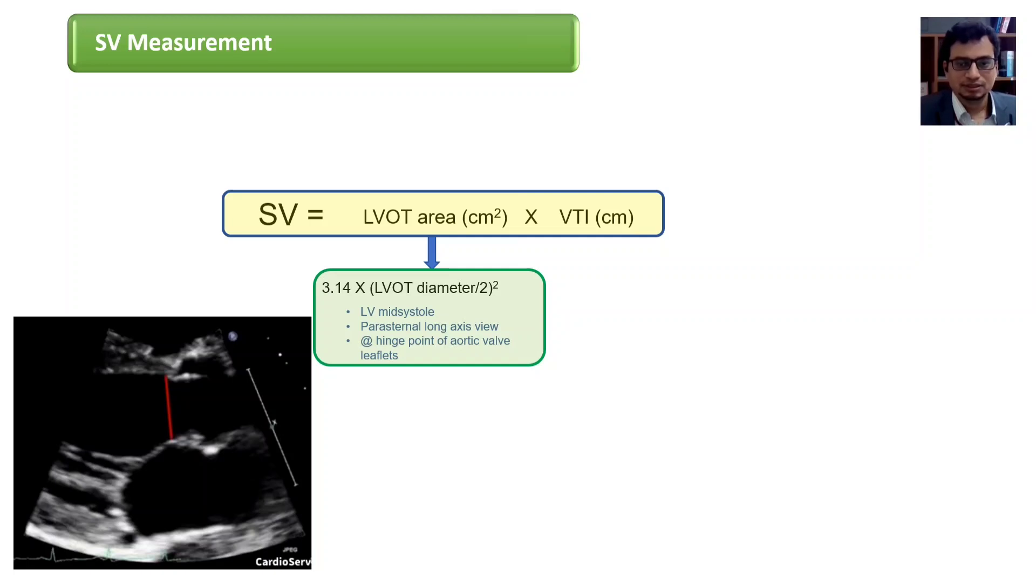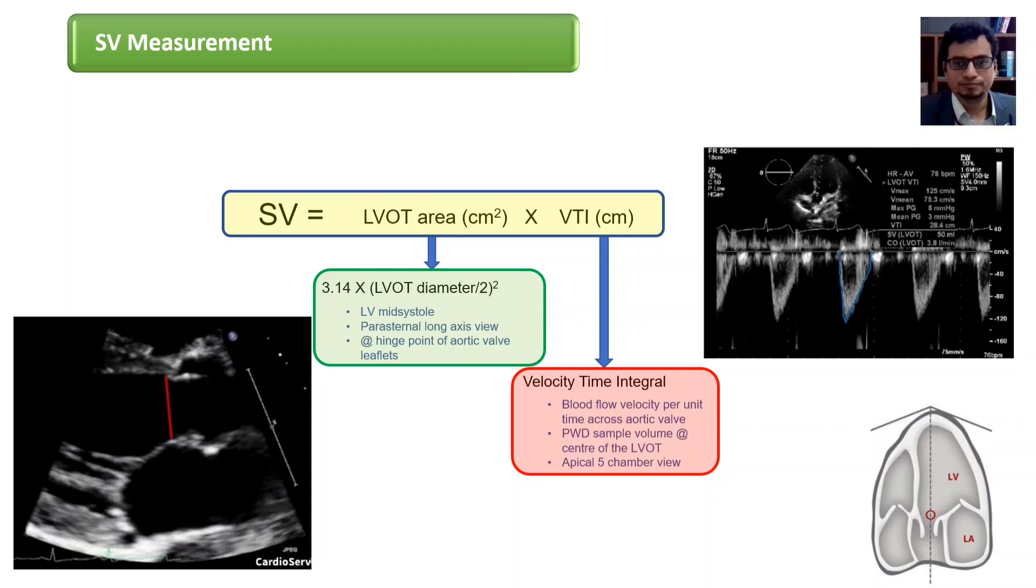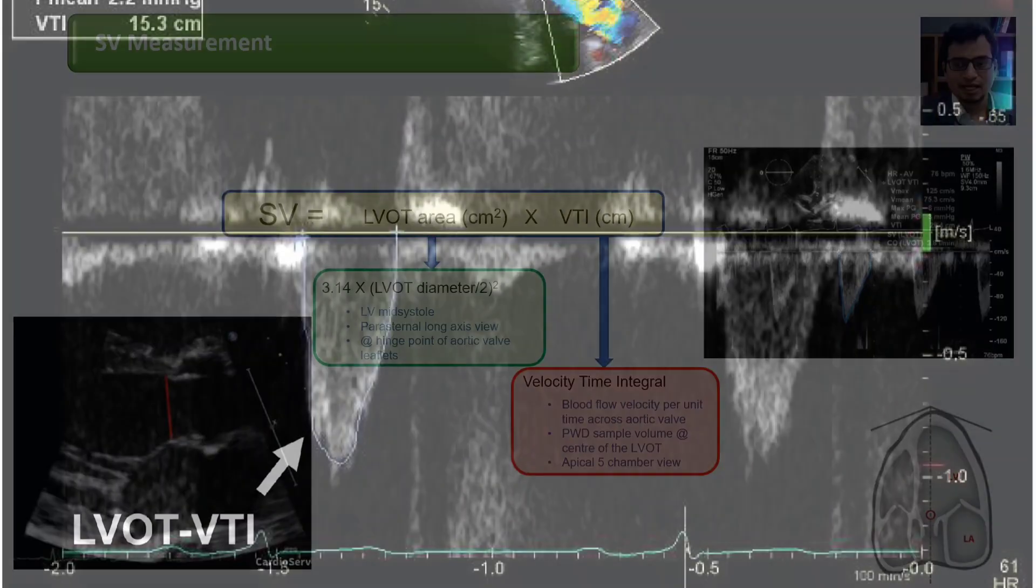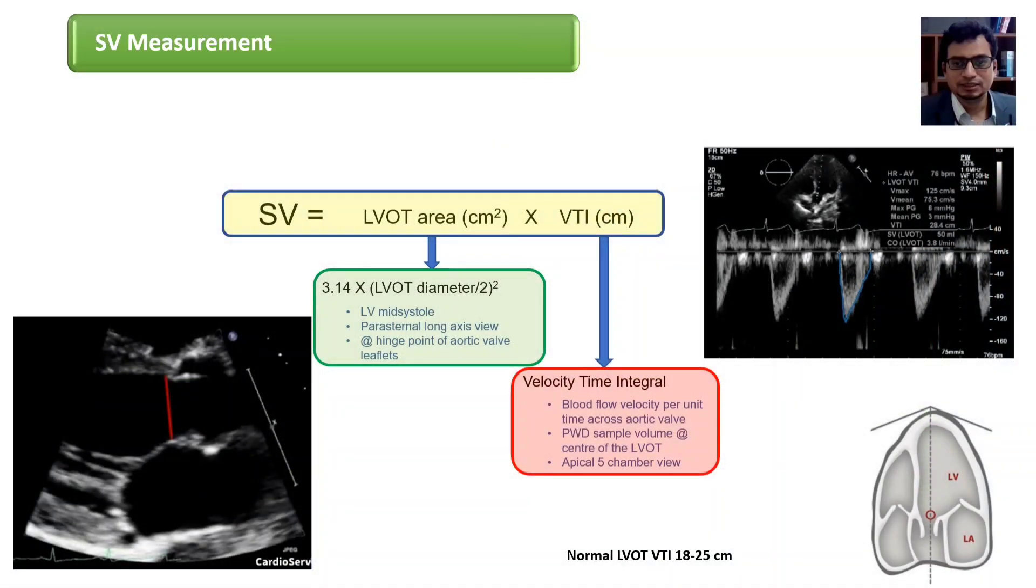The VTI represents the total flow across the area of the sample volume in systole. Then pulse wave Doppler sample volume cursor is placed at center of LVOT which will give the downward tracing of waveform and this waveform is traced and the software echo machine will give you the VTI value. The normal LVOT VTI is 18 to 25 centimeter.